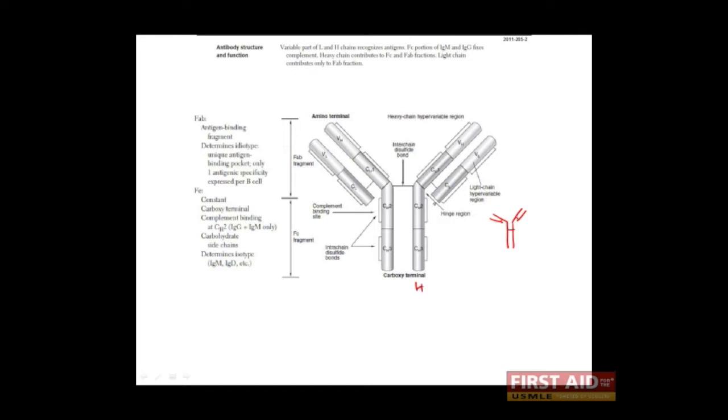Both the heavy and the light chains have constant and variable regions. As the name implies, the constant regions, which are here, here, and here on the heavy chain, and here on the light chain, are relatively constant. They don't change very much. The variable portion of the heavy chain and the variable portion of the light chain, however, vary a great deal from one antibody to the next.